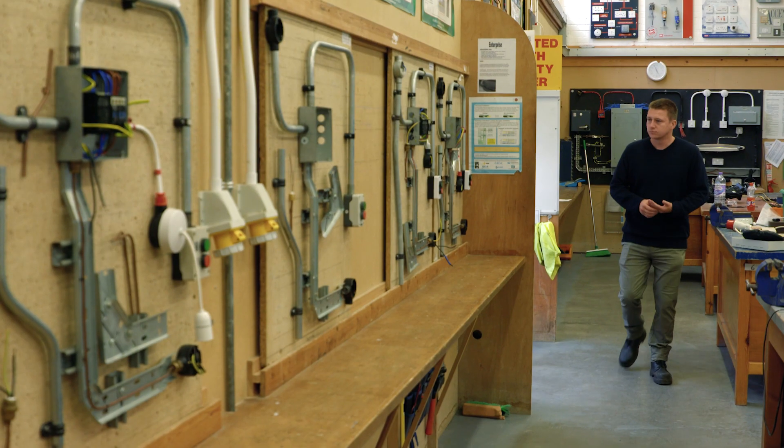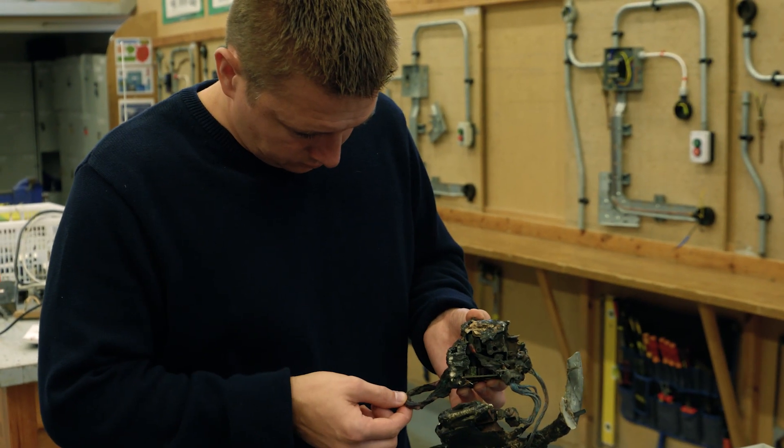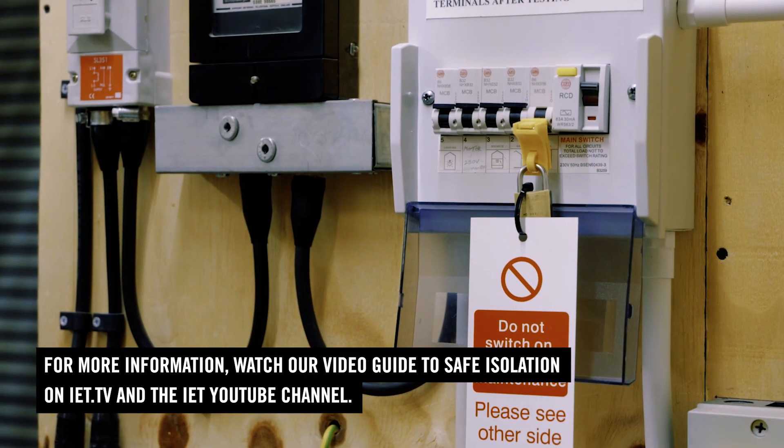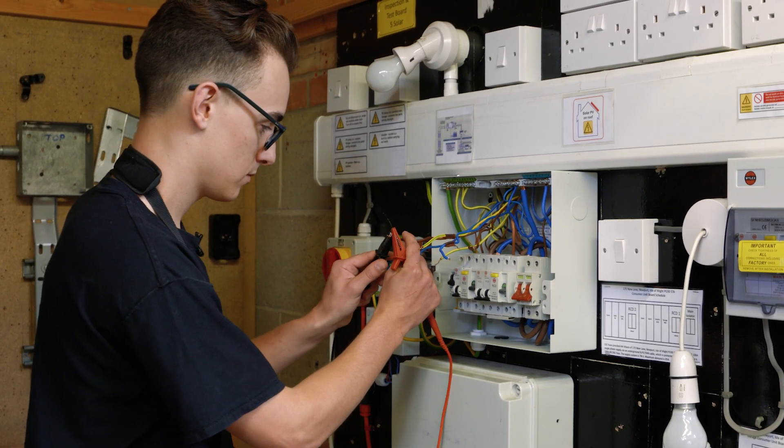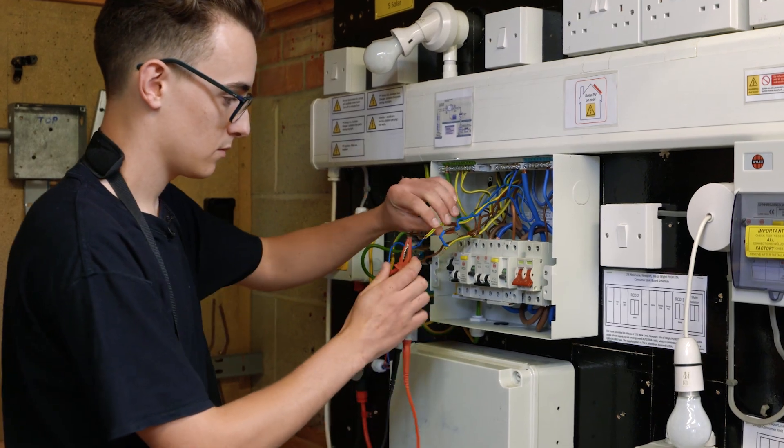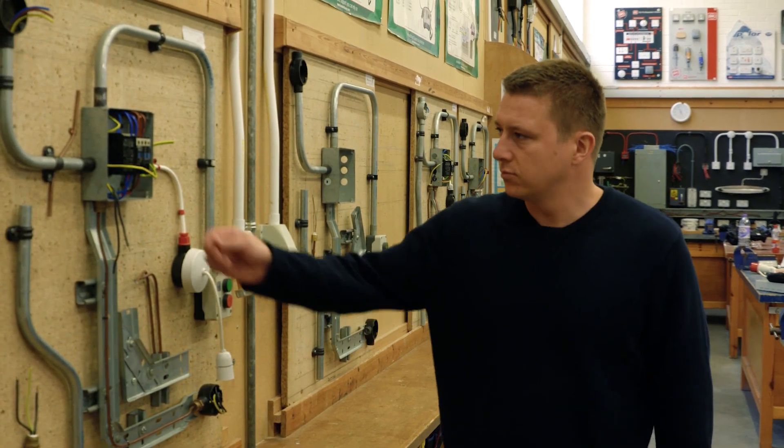Prior to carrying out any investigation of a fault, the circuit must be securely isolated. Have a look at the IET's student guide video on safe isolation. Remember that we are only testing the wiring system so it is essential that we remove or isolate all equipment that is connected to the wiring system.